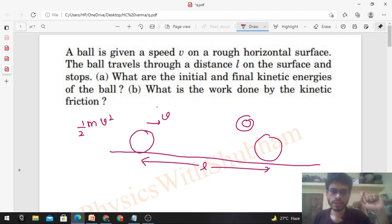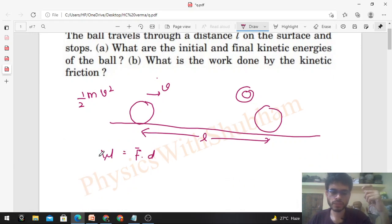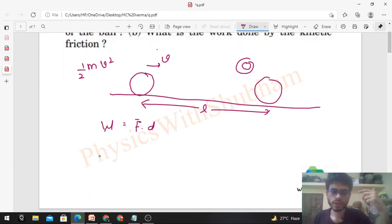What is the work done by the kinetic friction? The work done will be force dot displacement. You can see here the kinetic friction force. That is not given because kinetic friction force is how much? N into mu k.